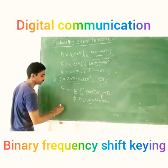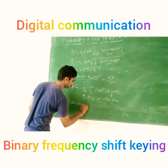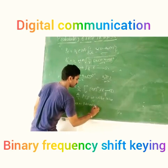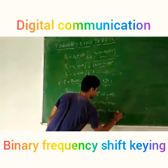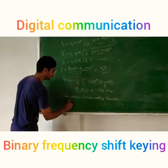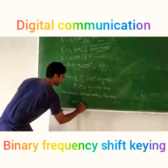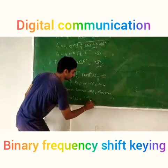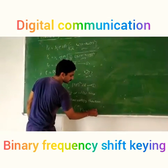Now according to Parseval's theorem, integral from minus infinity to infinity of X squared(L) dL can be written as integral from minus infinity to infinity of X squared(T) dT. Consider this as equation 3.